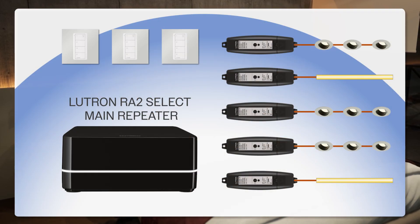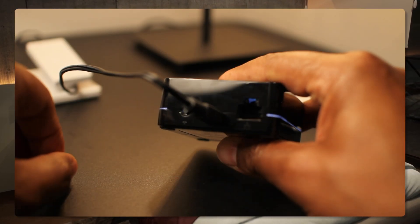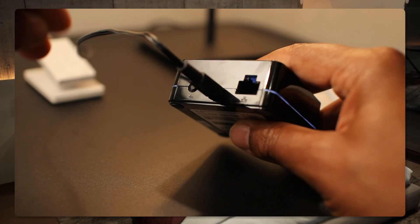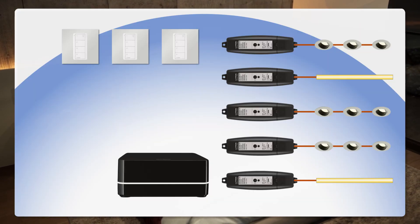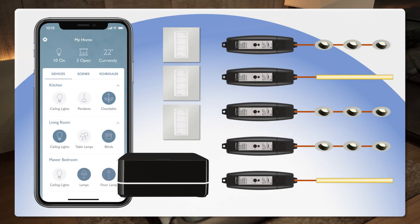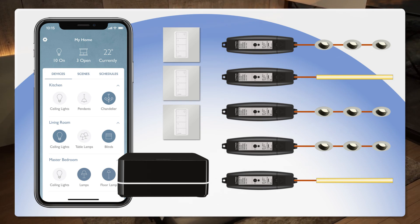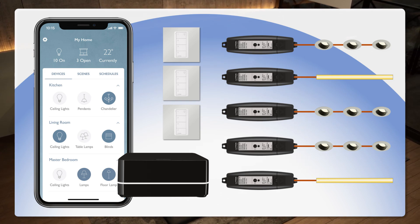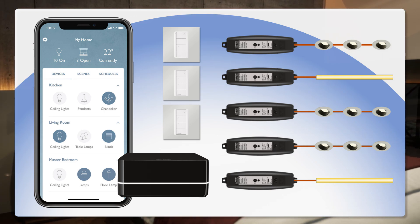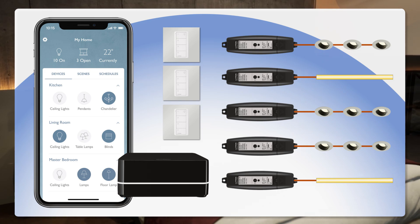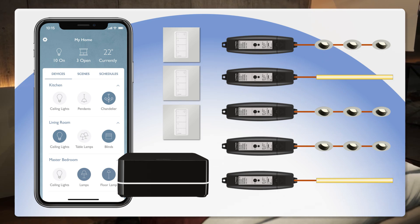To program your entire Lutron wireless system, connect your main repeater to your home network, and then use the Lutron app on your phone. From there, you will program your lighting scenes and any other cool features that the Lutron RA2 Select offers, like adding new Lutron devices when you decide to extend your system, program time clocks, or the integration with other smart home systems.